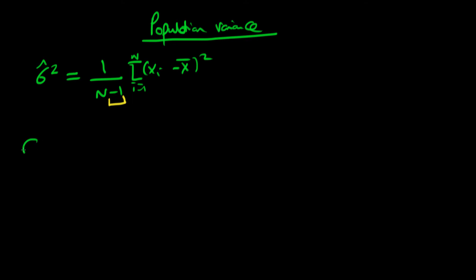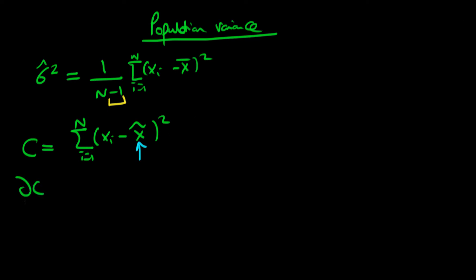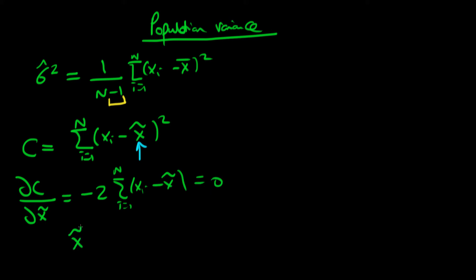Let's say that we had some sort of cost function that we were trying to minimise — specifically the sum from i equals 1 to n of x_i minus x-tilde, all squared. The idea is that we are trying to choose x-tilde to minimise this sum. To do this we differentiate this cost with respect to x-tilde, and we get minus 2 times the sum of i equals 1 to n of x_i minus x-tilde equals 0. It's quite easy to show that x-tilde in fact equals x-bar, which is equal to 1 over n times the sum of i equals 1 to n of x_i.